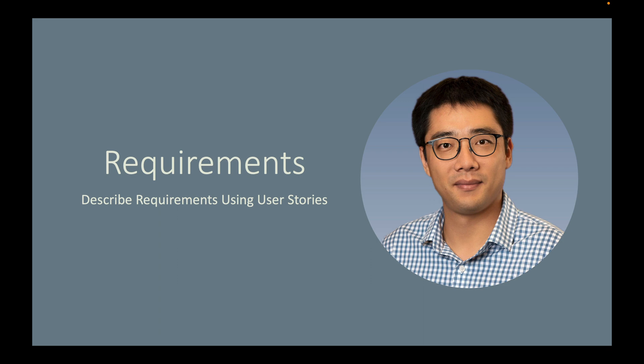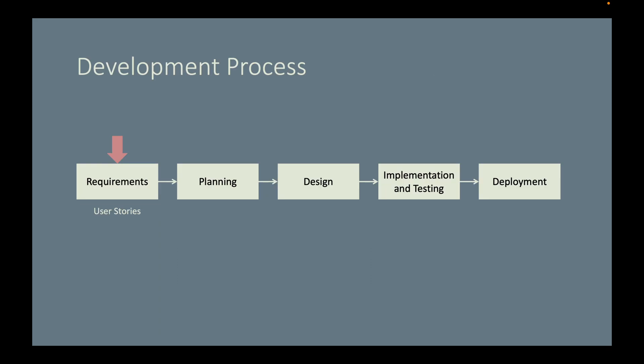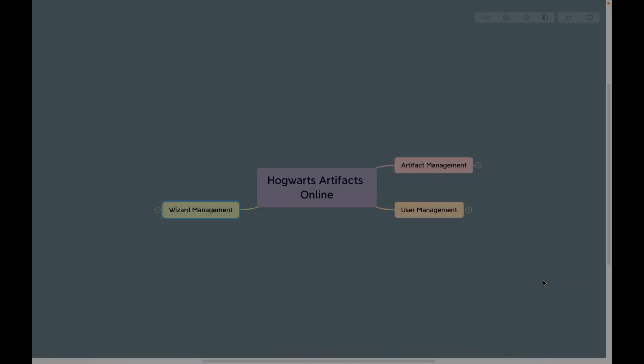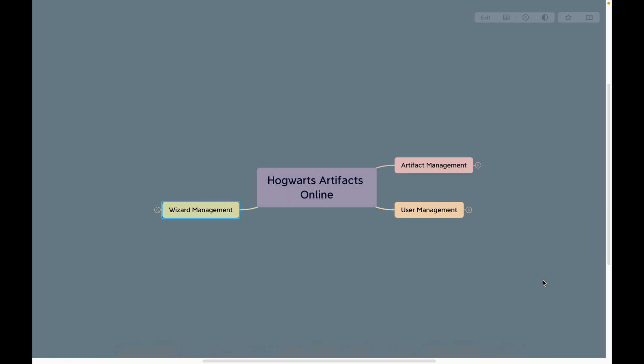Now let's work on the project. We don't want to miss the deadline, but first we need to have a clear understanding of the requirements — in other words, what should be implemented and how the system should behave. Here is the overview of our development process. We're now in the requirements activity for this project.